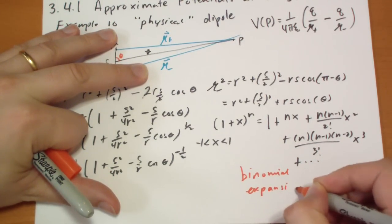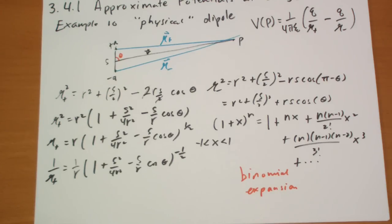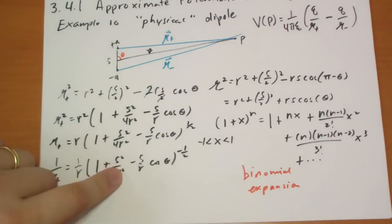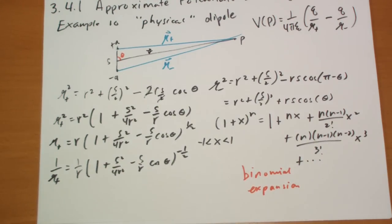Well, that's just equal to 1 plus n times X plus n times n minus 1 all over 2 factorial times X squared plus, well, you'll probably get the picture, all over 3 factorial of X cubed and so on. That's the binomial expansion. Let me write that out for you so you can look it up.